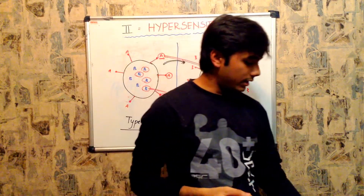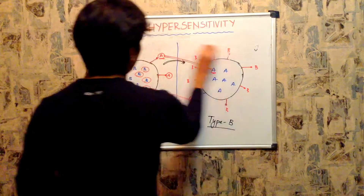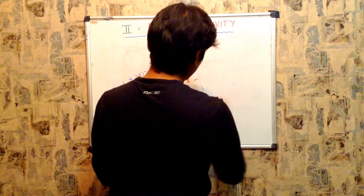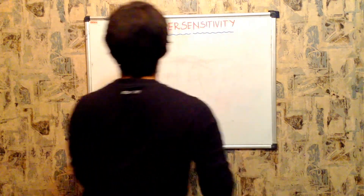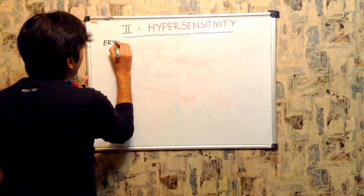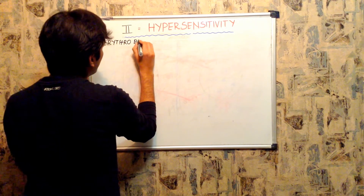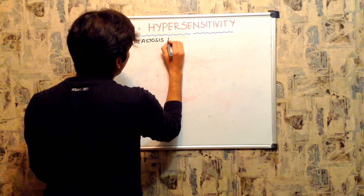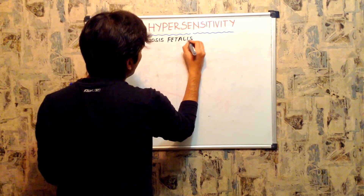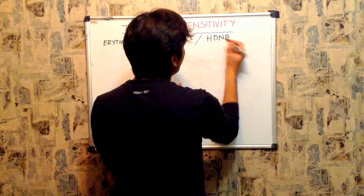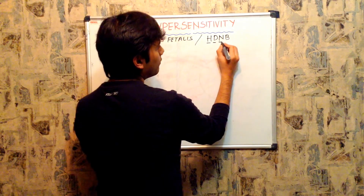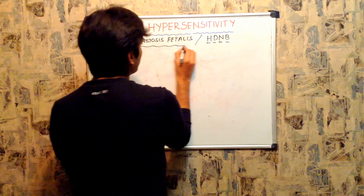One of the most commonly seen type 2 hypersensitivity conditions occurs between mother and fetus, called HDNB — hemolytic disease of the newborn — also known as erythroblastosis fetalis. We will discuss this condition now.